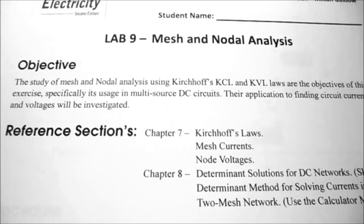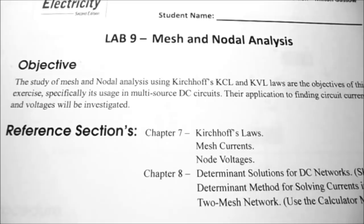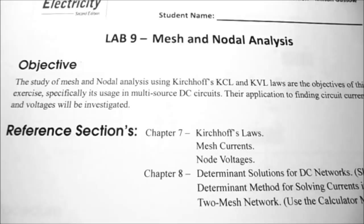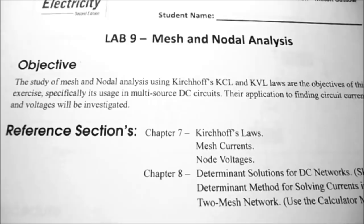Under reference sections I'm going to be referring to Sham's Outlines Basic Electricity, second edition. We're going to look at chapter seven, which is all about Kirchhoff's laws, mesh currents and node voltages. Chapter eight talks about determinant solutions for DC networks, the determinant method for solving currents in a two-mesh network. I'm going to skip over most of this and just show you how to use a calculator to solve for these.